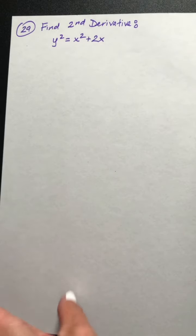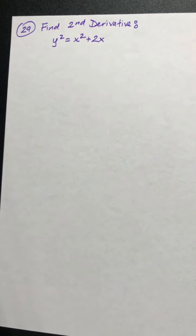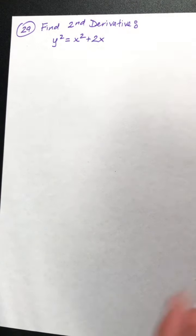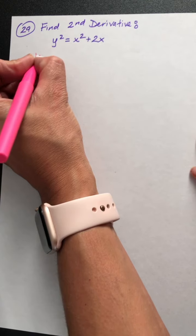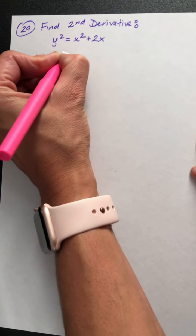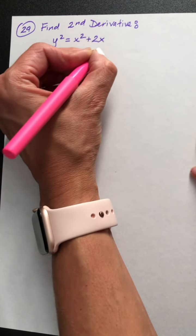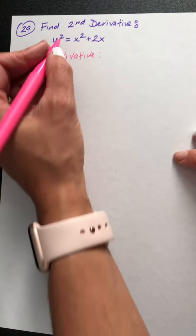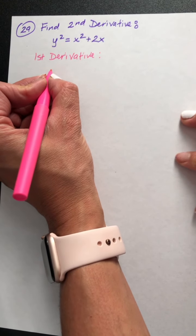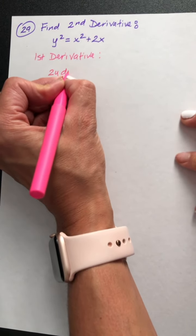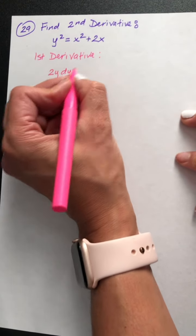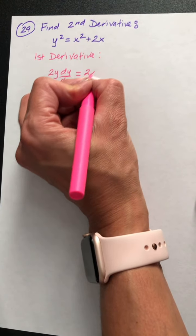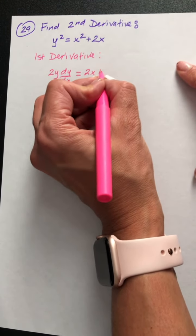That's 25. Last one — number 29. We get to find a second derivative and this problem is pretty cool. We need to take a first derivative before we can get to the second derivative. So let's take the derivative: derivative of y squared would be 2y, but because it's a y, dy dx, equals the derivative of x squared, 2x, plus the derivative of 2x, which is 2.